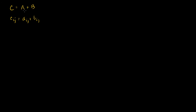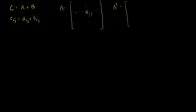Now let's think about the transposes of these matrices. If A has entries ij, let's say that A transpose has entries we'll call A prime ij. These aren't probably going to be the same — that's its ij-th entry, in the i-th row, j-th column, in A transpose.